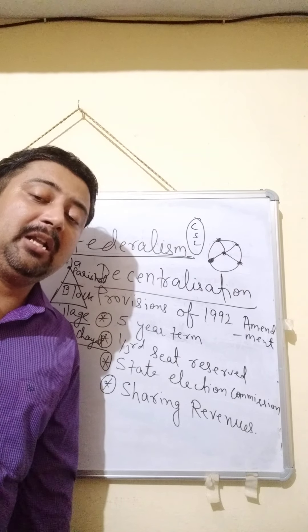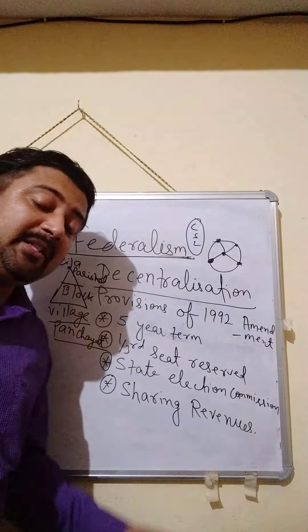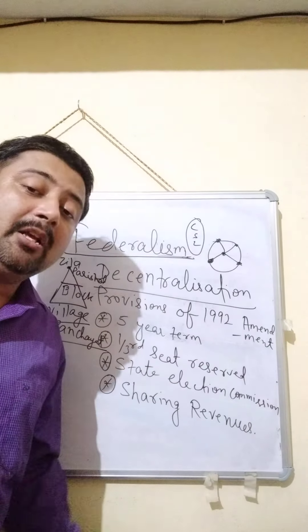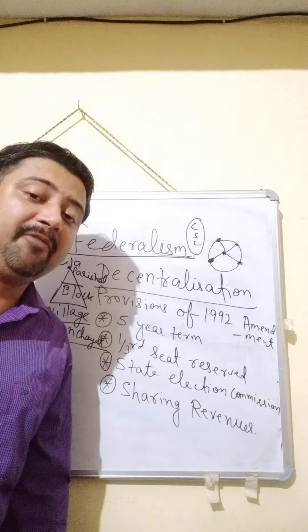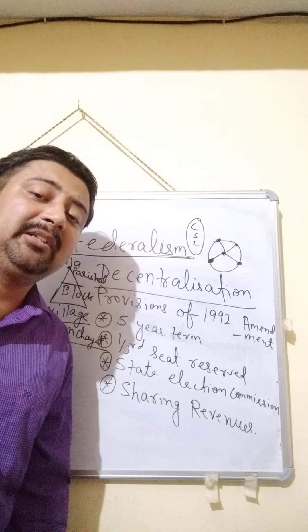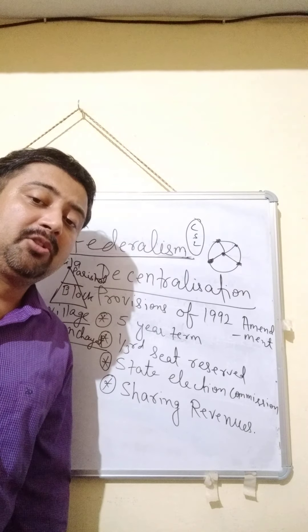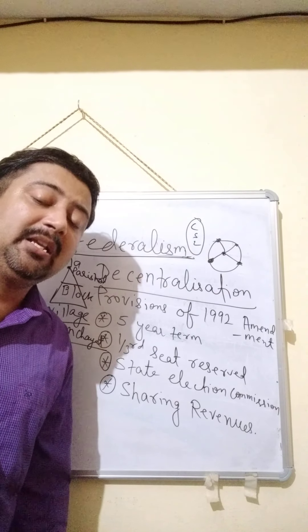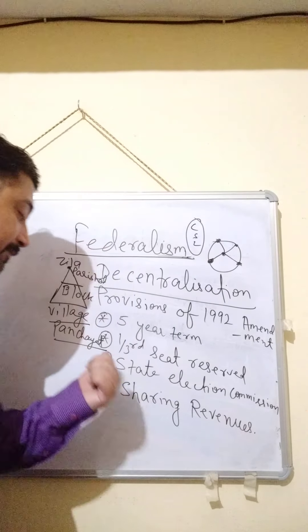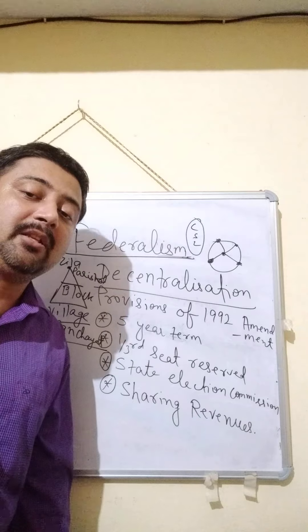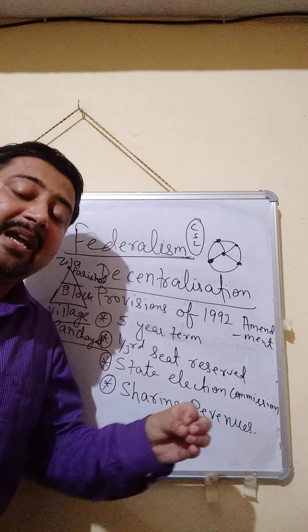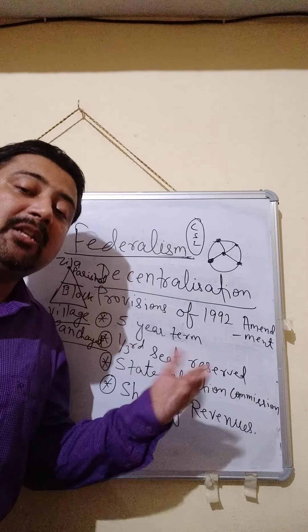Two words that may confuse you are village panchayat and gram sabha. Village panchayat is also termed gram panchayat. Gram sabha is the assembly of all adult members who have completed the age of 18 in the village. The gram sabha acts like a legislature because it supervises the work of the gram panchayat. The village panchayat acts as the government or executive, while the gram sabha supervises its work.